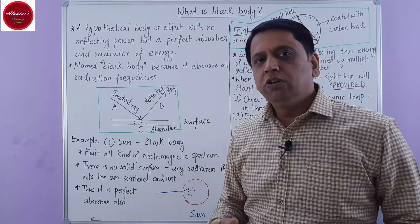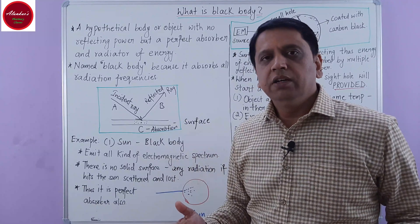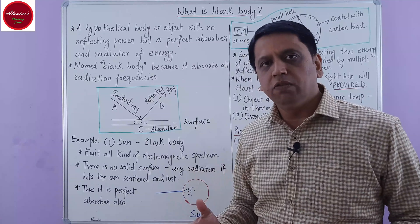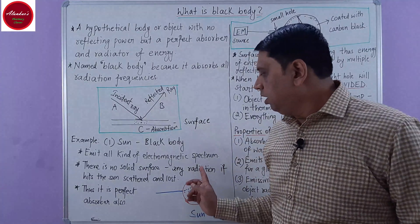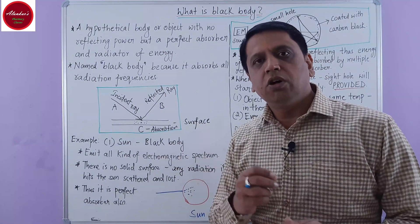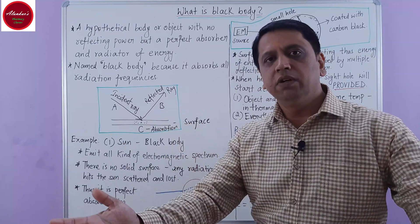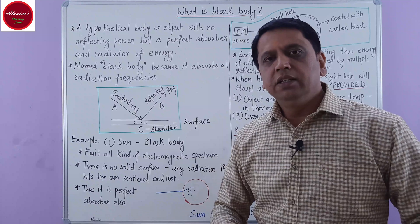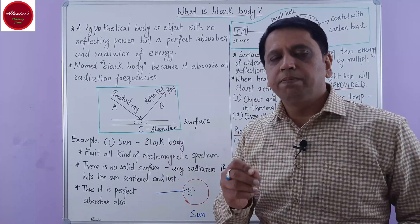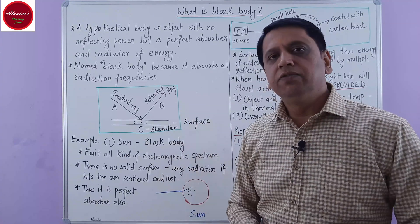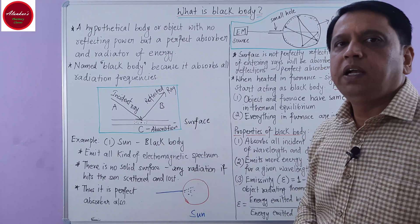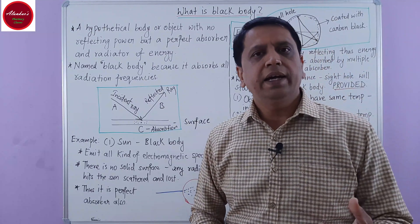Actually, the sun is not a perfect black body because it is not a perfect emitter. Although it emits all kinds of radiation, some sort of radiation is restricted because of the fast movement of ions that takes place over the surface of the sun. This causes a loss of some radiation coming outside into space through its surface, and that is why the sun cannot be termed a perfect black body — we can say it is very close to the definition of a black body.